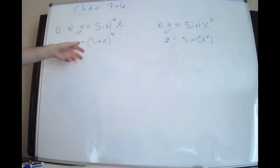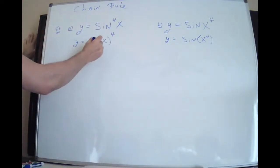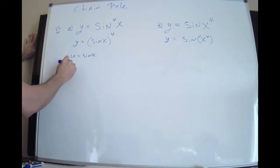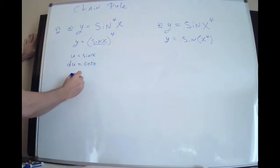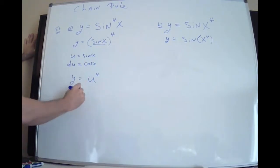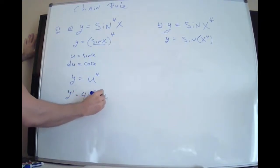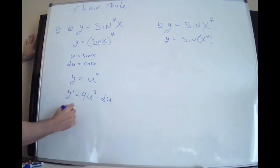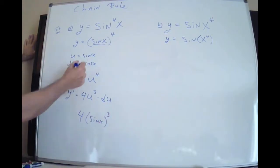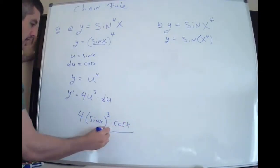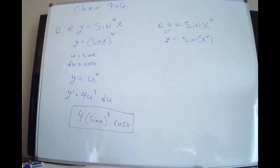When I attack them with the chain rule, the u I pick is different. For the first one — sine⁴(x) — my u is sine(x). I immediately take the derivative: du = cosine(x). I replace sine(x) with u, so now I have u to the fourth. The derivative of u⁴ is 4u³ times du. The problem is over: plug everybody back in. It's 4 sine³(x) times cosine(x) — that's the answer.